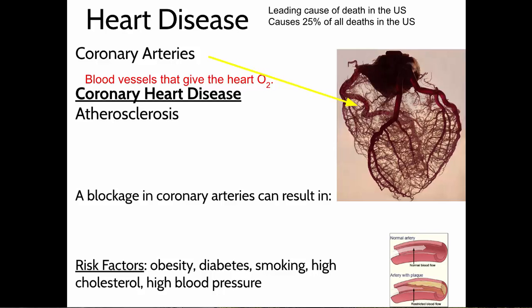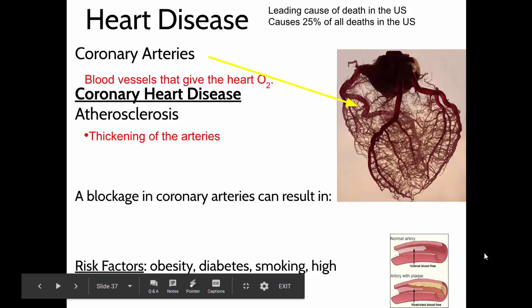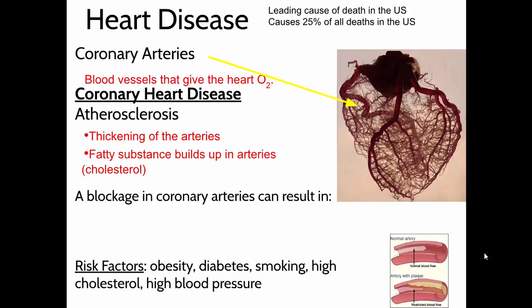So why would this stop working? Why would these coronary arteries stop supplying the heart muscle with the blood that it needs? What could happen in our arteries? They can basically get clogged with cholesterol and fats. We call these things plaques that can build up and lead to a restriction in the flow of blood to the heart. This disease is called atherosclerosis — it is the thickening of the artery walls due to the buildup of these plaques inside of the artery.